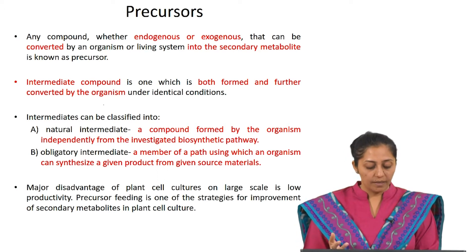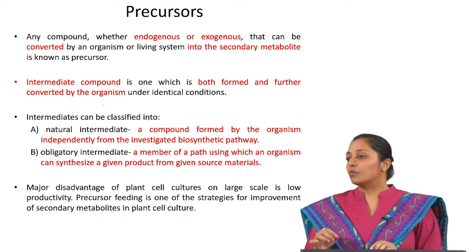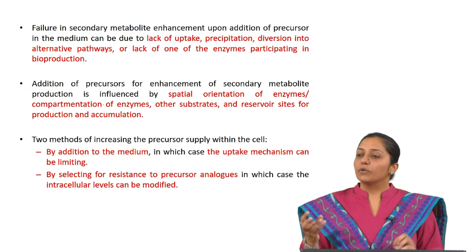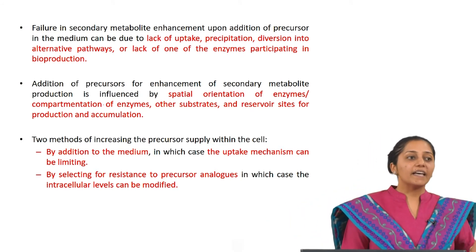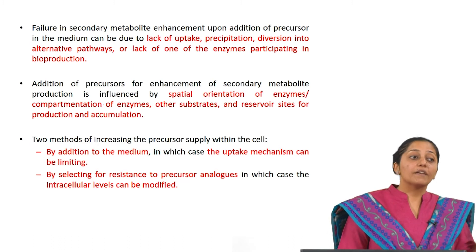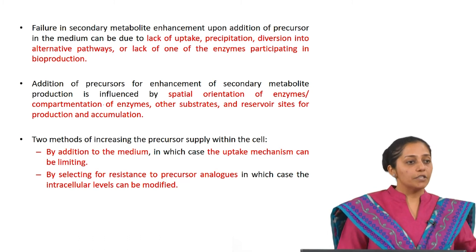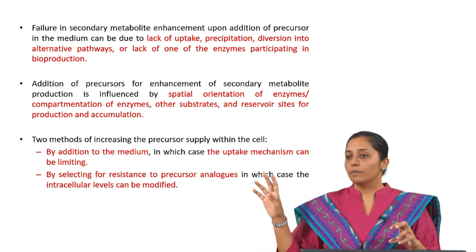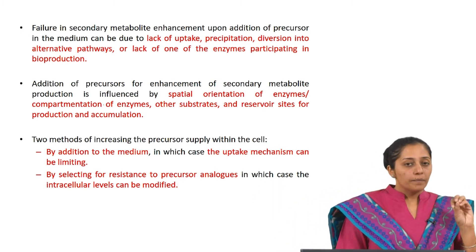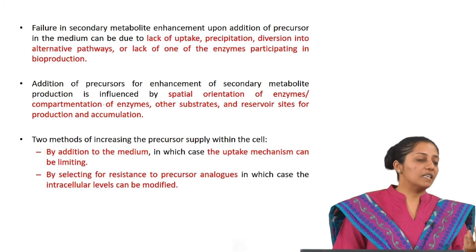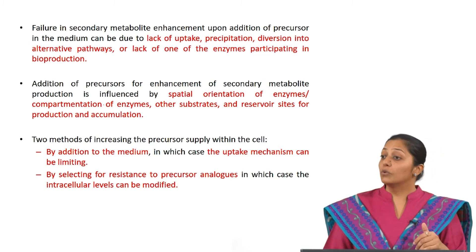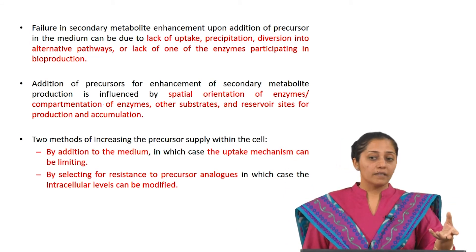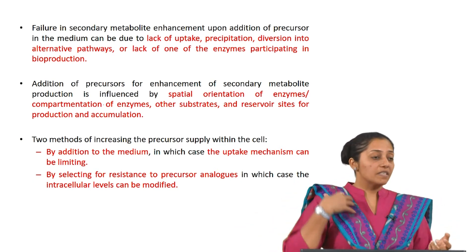Intermediates can be classified as natural intermediates — formed by the organism independently from the investigated biosynthetic pathway — and obligatory intermediates, which are members of the pathway through which an organism synthesizes a given product from a given source material. Precursor feeding can be used to improve the yield of secondary metabolites. Exogenous precursors are compounds that the cell can take up and further metabolize to produce the product. Sometimes even though a precursor is part of the biosynthetic pathway and should drive the reaction forward, it does not happen.